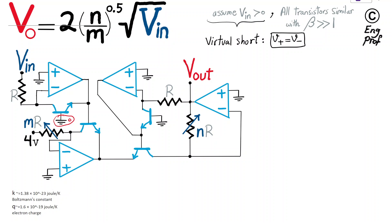We have a virtual ground at 0 volts. From there, going up, we have plus VBE1 for transistor T1. Then we reach the emitter of T1, which is connected to the base of T2. From there, we have another VBE2. So basically from ground, the common node E is just the cascade of two VBE voltages in series.